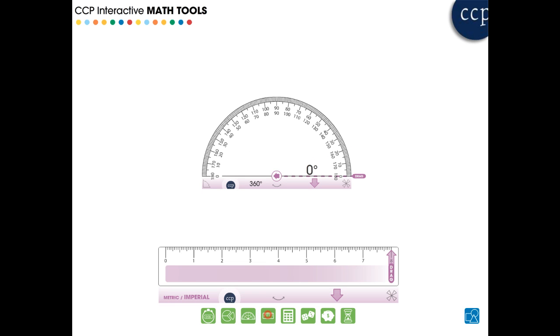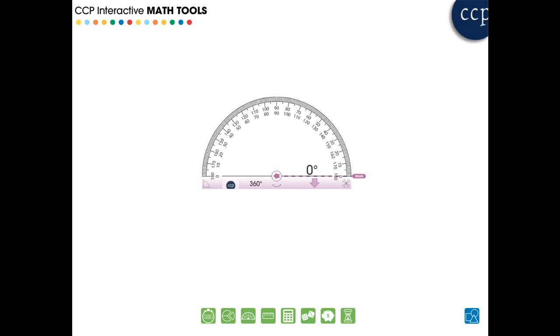The protractor and ruler tools are great for measuring shapes. Find angles using the protractor tool. Switch between 180 and 360 degrees.